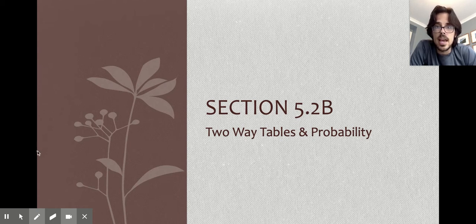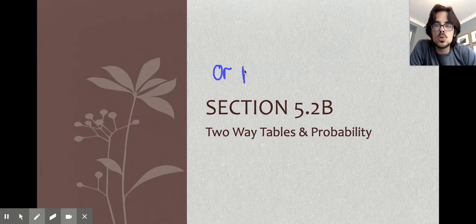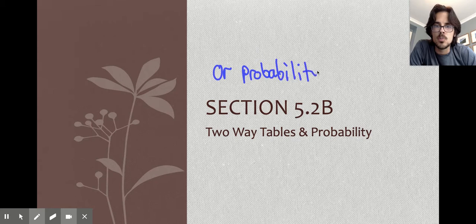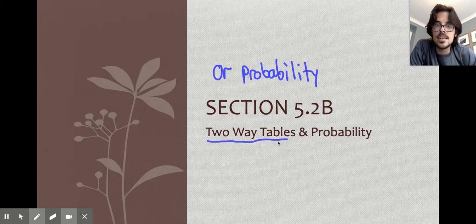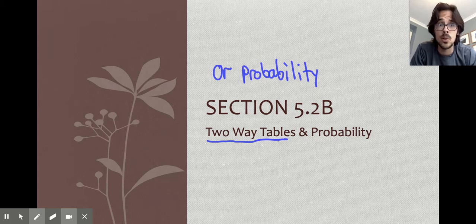In this lesson we're going to tackle the concept of OR probability. You should remember OR probability from Algebra 2. We talked about it briefly towards the end of the class, but we'll review it here. We're going to use a new strategy called a two-way table, which we've talked about in this class. Using tables makes OR probabilities very straightforward.